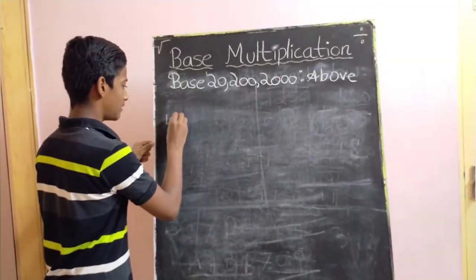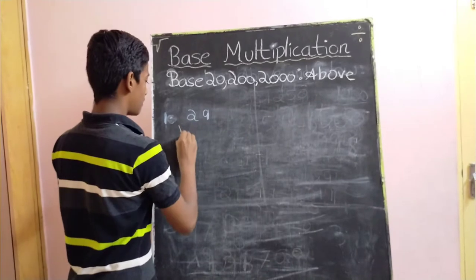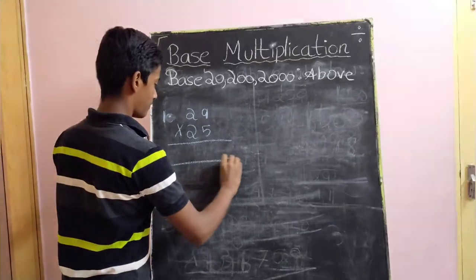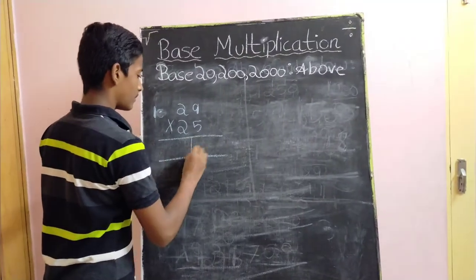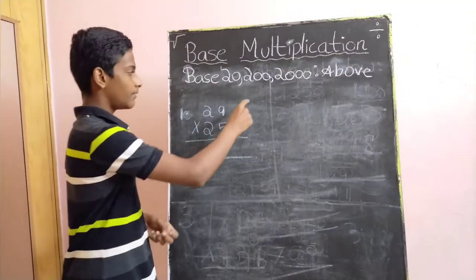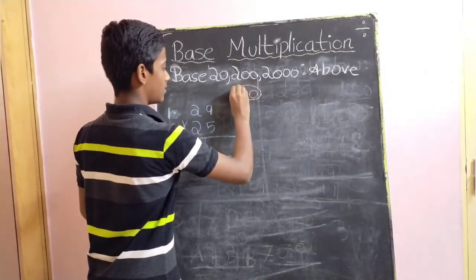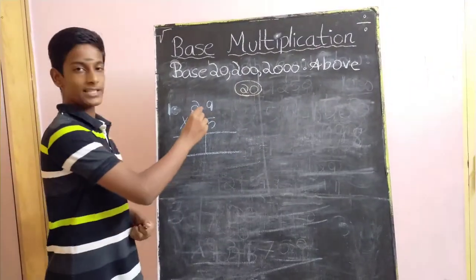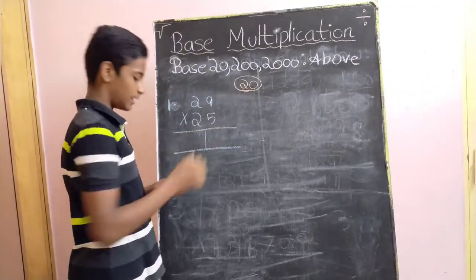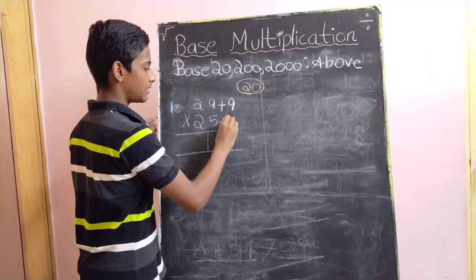Let our first example be 29 into 25. As we do usually, first we must identify the nearest secondary base number, which is 20 in this case. The second step is to identify the difference between 29 and 20, and 25 and 20. Here it is plus 9 and plus 5.